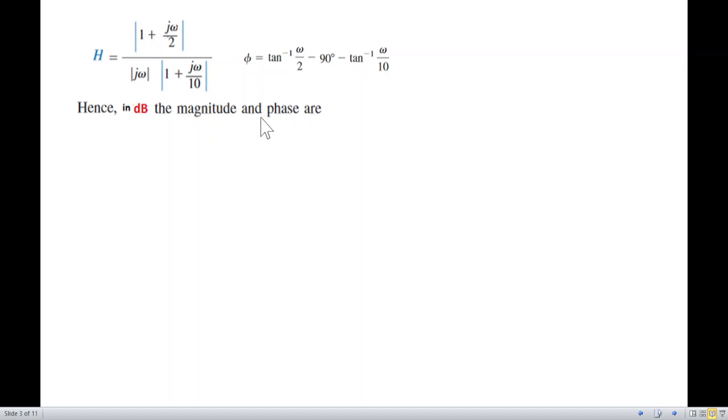In terms of dB, we convert by multiplying by 20 log. So dB is decibel: 20 log of each term. Minus 20 log 1 plus j omega by 10.